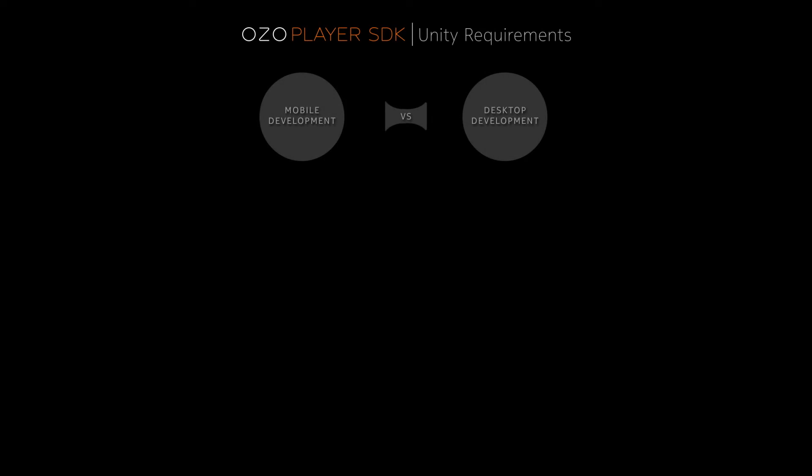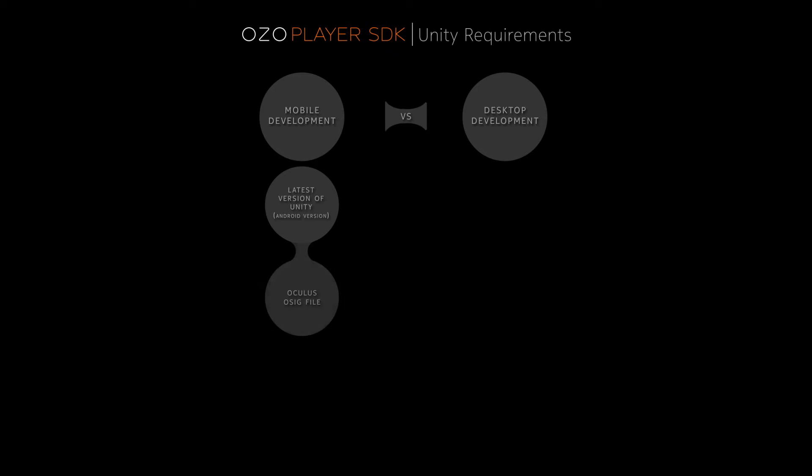For mobile development you are fine with a computer that can run the latest version of Unity. When installing the Unity engine, make sure you select the Android environment. In addition, you can follow the instructions for setting up the Android SDK from the Unity website. To be able to run the development version of any app on Gear VR, you will need to generate the Oculus OS6 file for each mobile phone you plan to use. This can be done in the Oculus developer site's tools section.